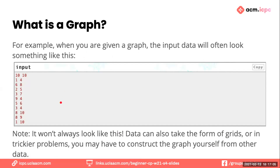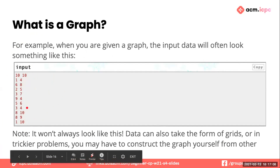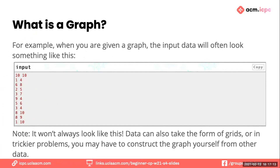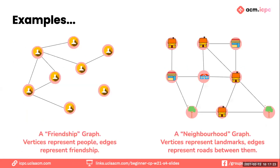When you're given a graph, the input data will often look like a list of edges. It can also take the form of grids or trickier problems where you have to construct your own graph from the given data. Here are some real-world examples: a friendship graph where vertices represent people and edges represent friendships, and a neighborhood graph where vertices represent landmarks and edges represent roads between them.